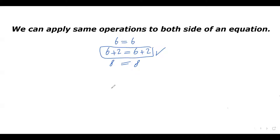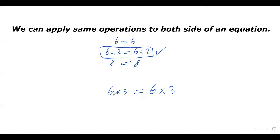How about if I multiply something to the left and multiply that same thing to the right side as well? Let's say I have 6 times 3 on the left side and I multiply the right side by 3 as well. So on the left side I have 6 times 3 is 18, and on the right side 6 times 3 is 18. So this equation is still true.